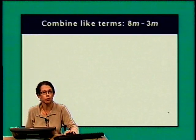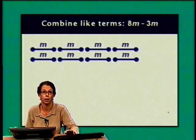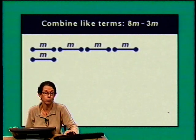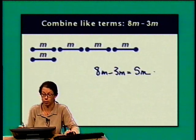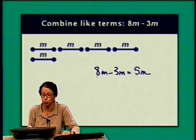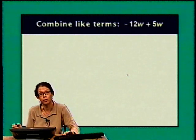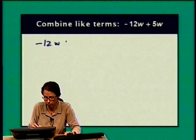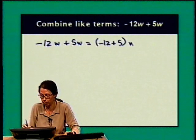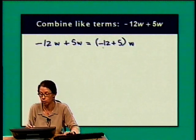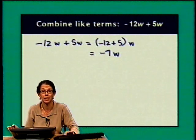Let's combine some like terms. 8m minus 3m equals 5m — I just subtracted 8 minus 3 to get 5. For negative 12w plus 5w, I add negative 12 and 5 to get negative 7, so the result is negative 7w.